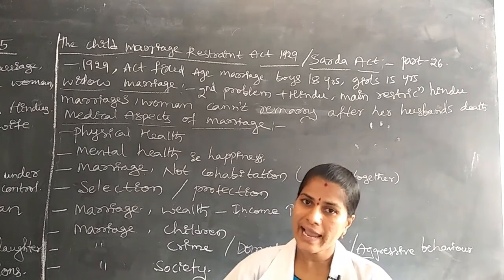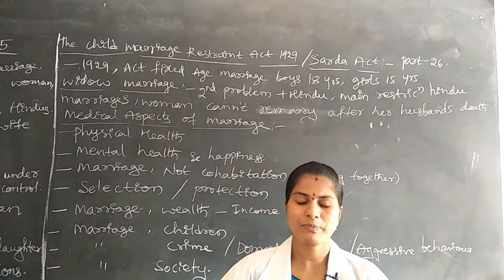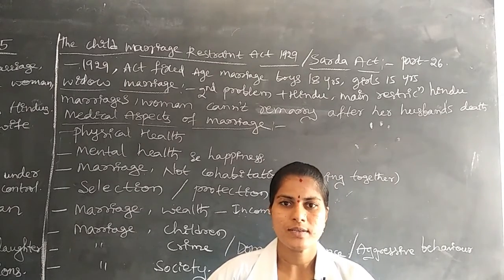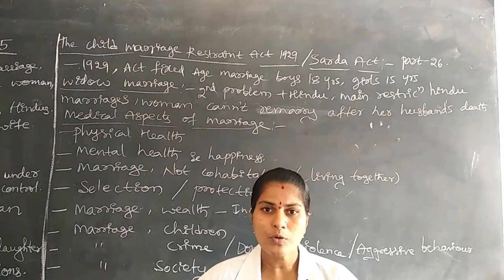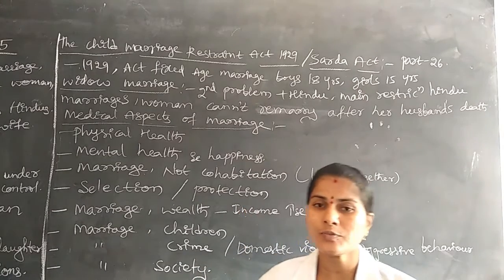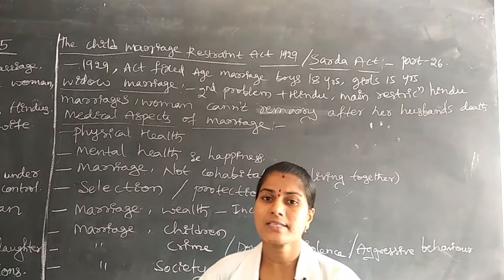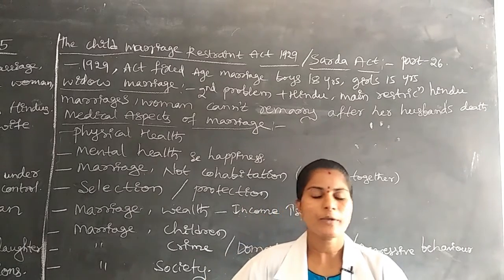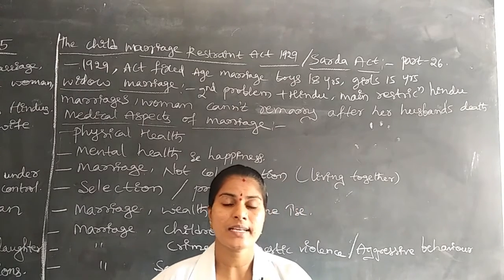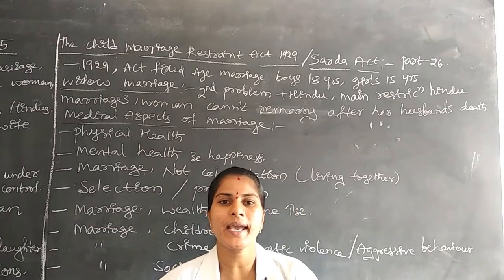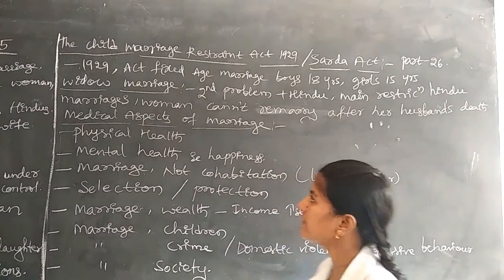The Sarda Act exists in society to protect children — both girls and boys — from child marriage. For boys, the groom must be at least 18 years of age to be eligible for marriage. Before 18 years, he is not eligible for marriage. These rules and criteria are set out under the Sarda Act.